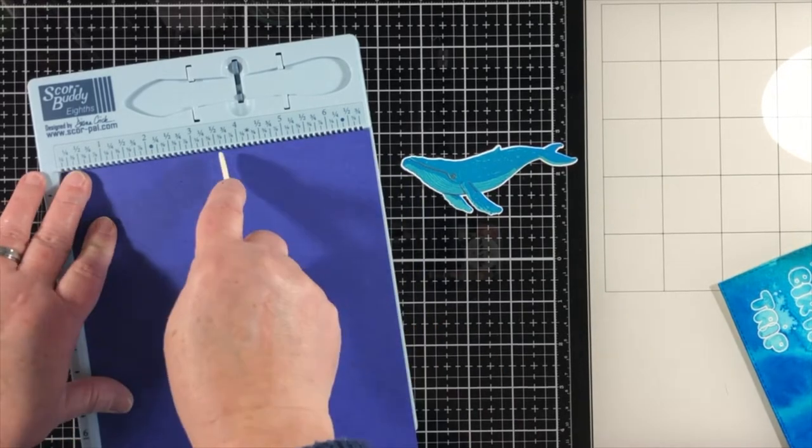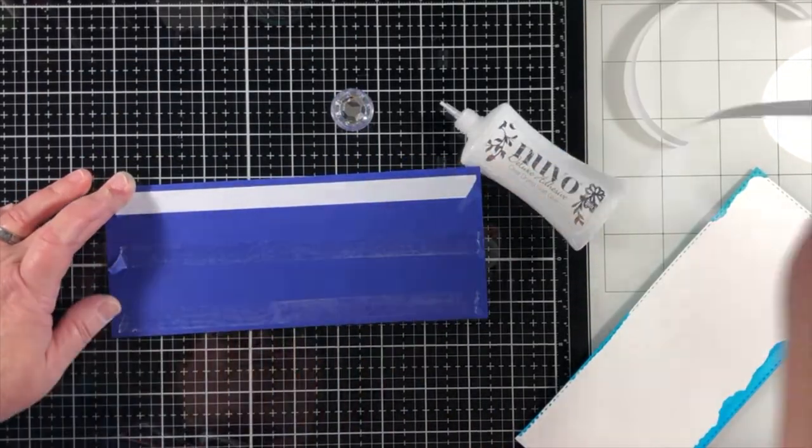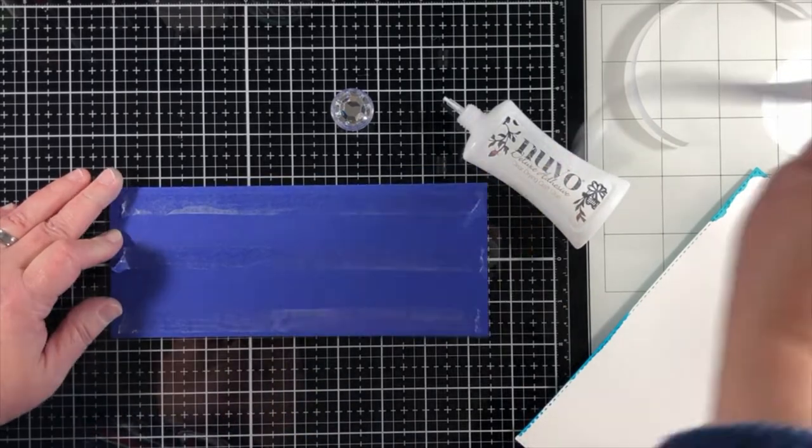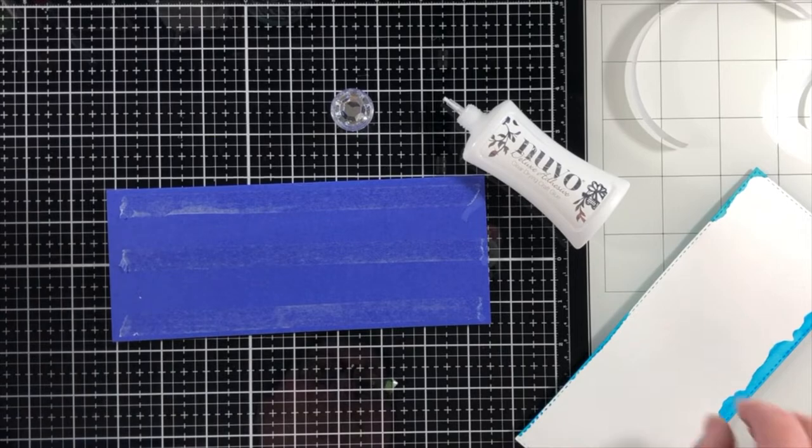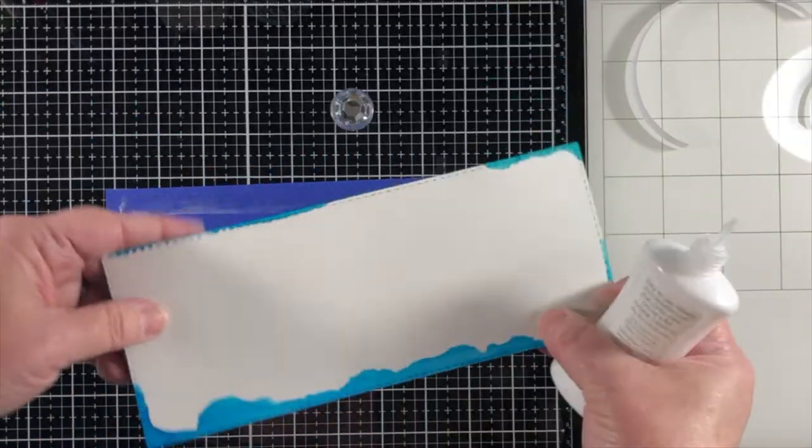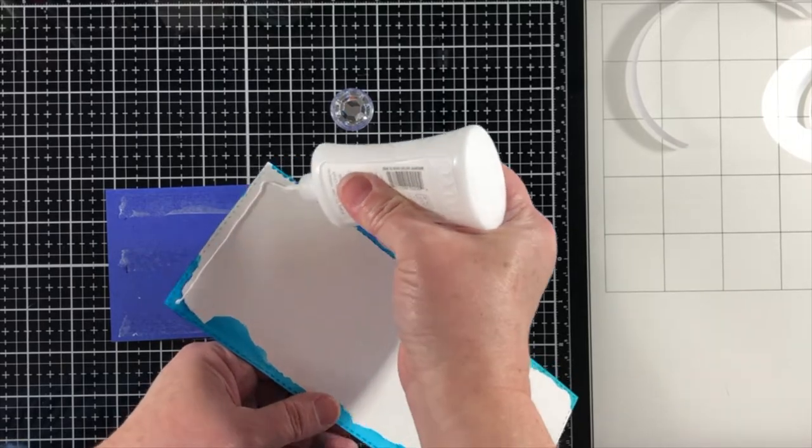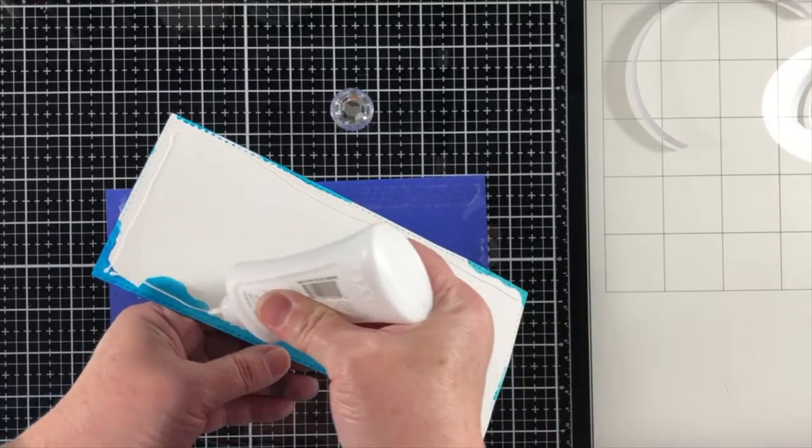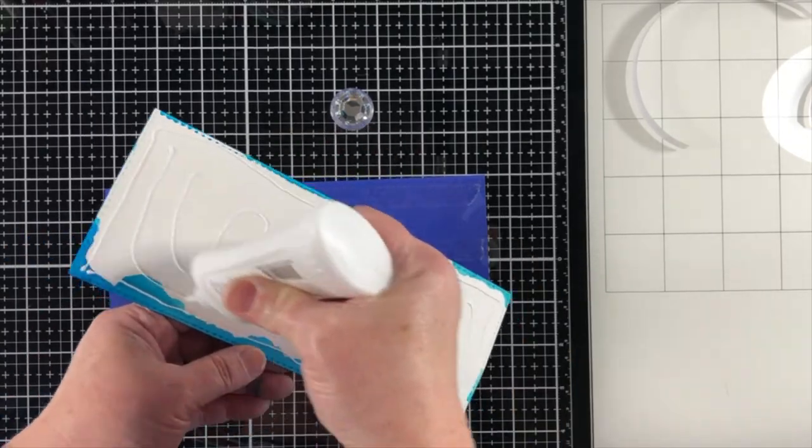Layering stamps, you know, you can sometimes hit or miss, but the ink turned out so crisp on this that I was really pleased. So I'm going to adhere this panel down to a piece of blue cardstock that I've made into my card base. And this is a slimline card that will measure eight and a half by three and a half inches.